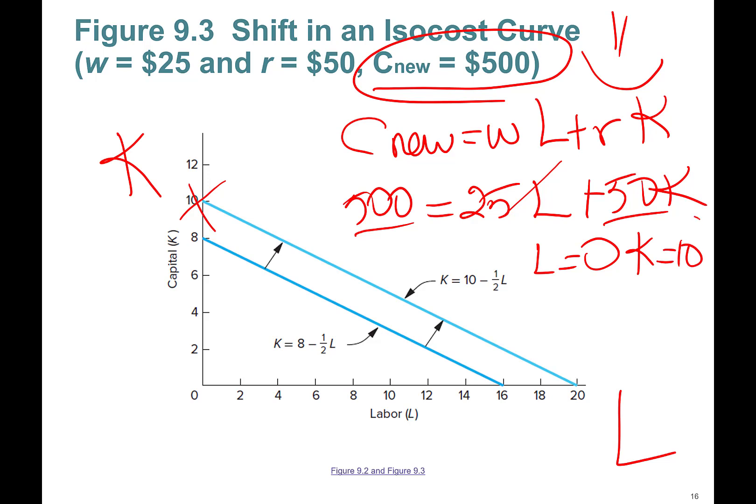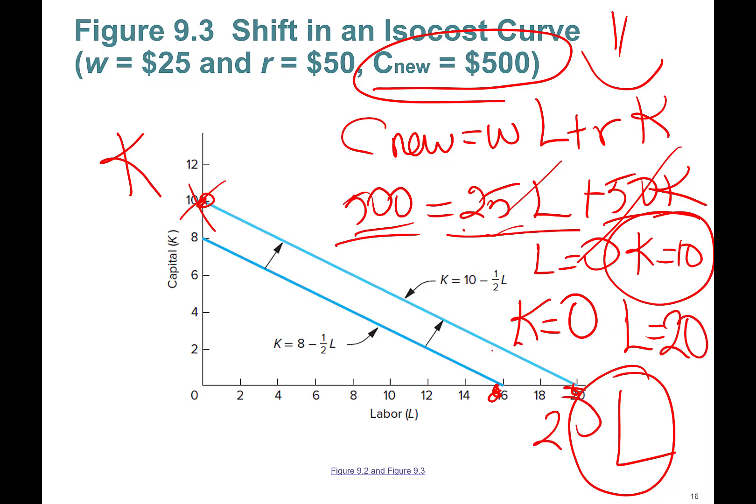Okay, so if labor is zero, so one extreme, right? I'm going to calculate capital—capital, capital intercept. Labor is zero, then 500 divided by 50. Capital is going to be 10. So maximum now I can actually hire 10 capital with zero workers. Let's say my capital is zero. So I want to find this intercept here. If capital is zero, right, 25L is equal to 500. So labor is going to be 20 units. So 20, 10.